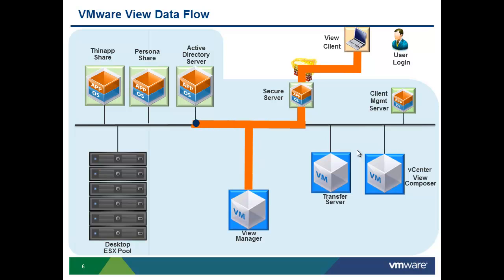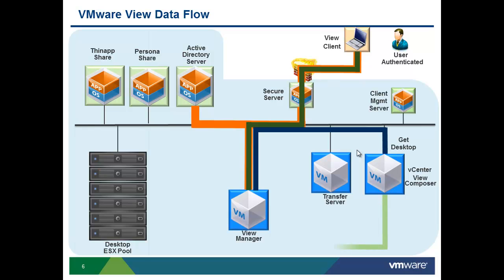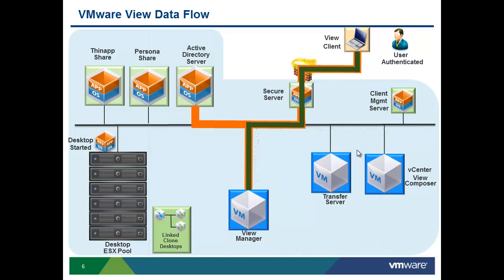Secure Server will forward the session to the View Manager, and View Manager will talk to Active Directory in order to authenticate the user. Once the user gets authenticated, View Server will return a list of entitled desktops to the user. The user will select the desktop he wants, or in some instances View can be configured to provision a desktop automatically. View Manager can also pre-provision a virtual desktop. In our scenario, we are showing a link clone desktop being created. Once a new desktop is ready, View Manager can provision that desktop to a new user. In some scenarios, companies also use local mode enabled desktops, allowing users to run their View desktops locally on their PCs or laptops.